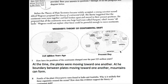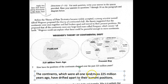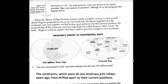Number 7: how have the positions of the continents changed over the past 225 million years? Even if you didn't know anything about this, all you had to do was look at the picture and see that they're all together and now they're all apart. The answer: the continents, which were all one land mass 225 million years ago, have drifted apart to their current positions. Basically, 225 million years ago they were all together, and now they have spread apart.